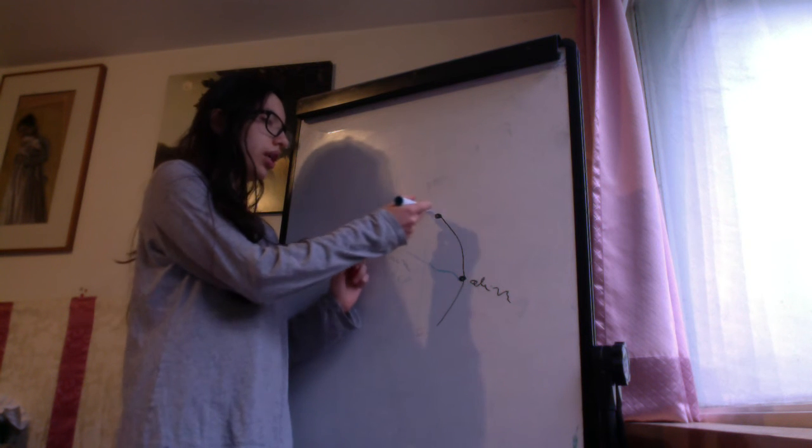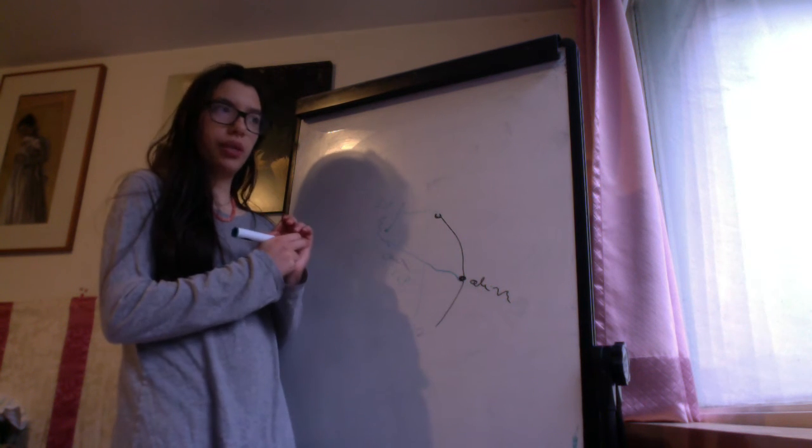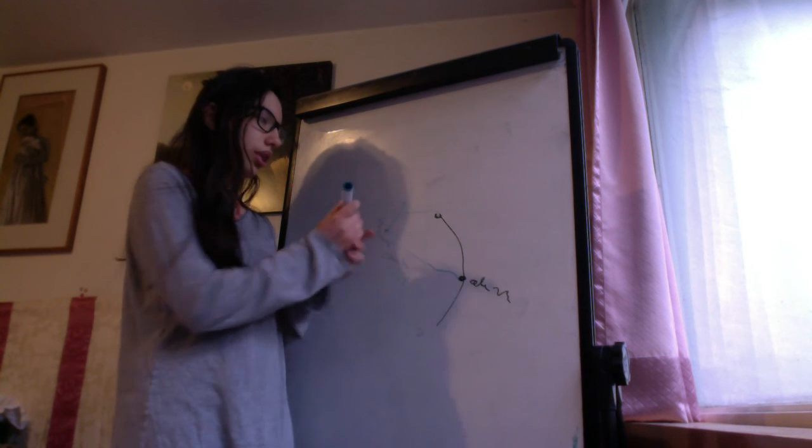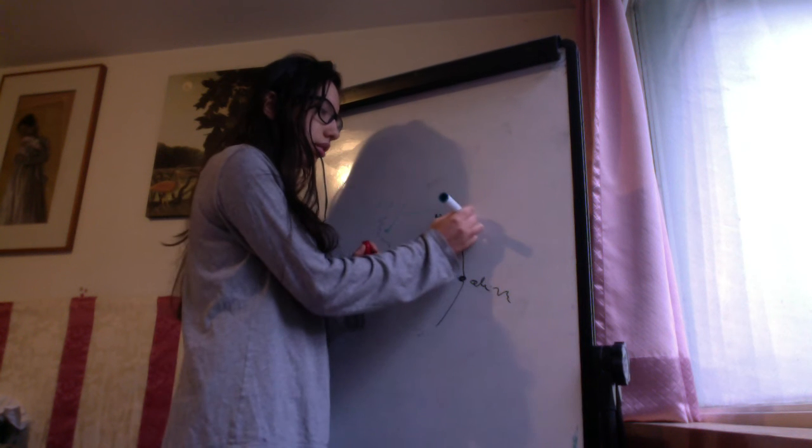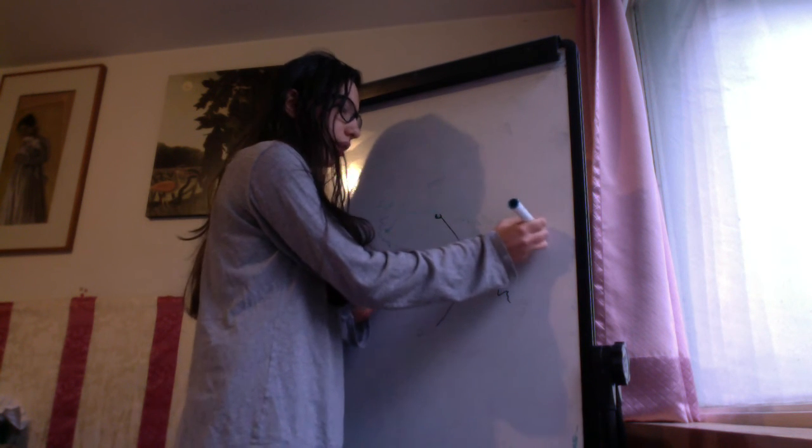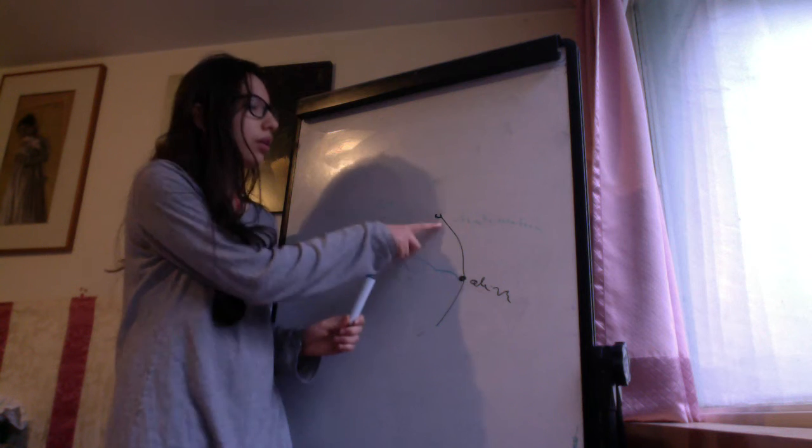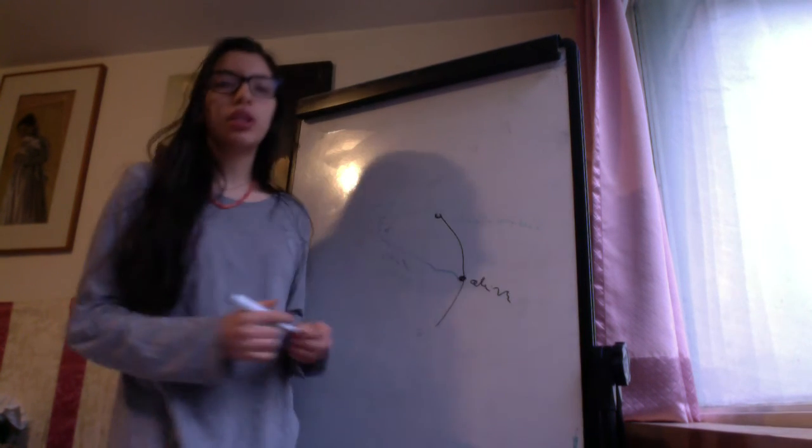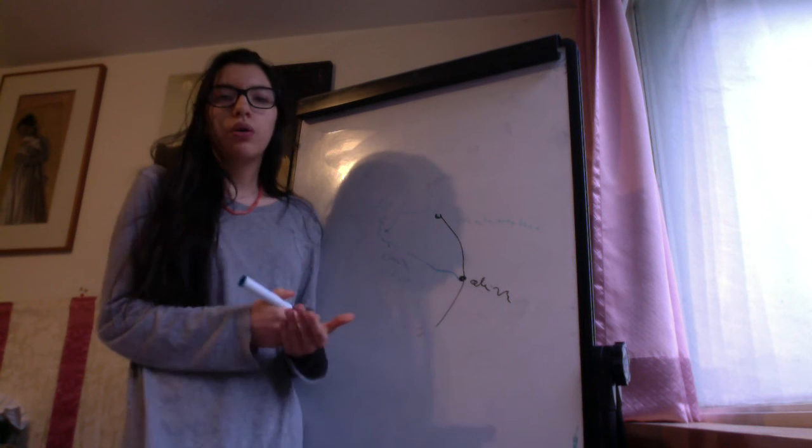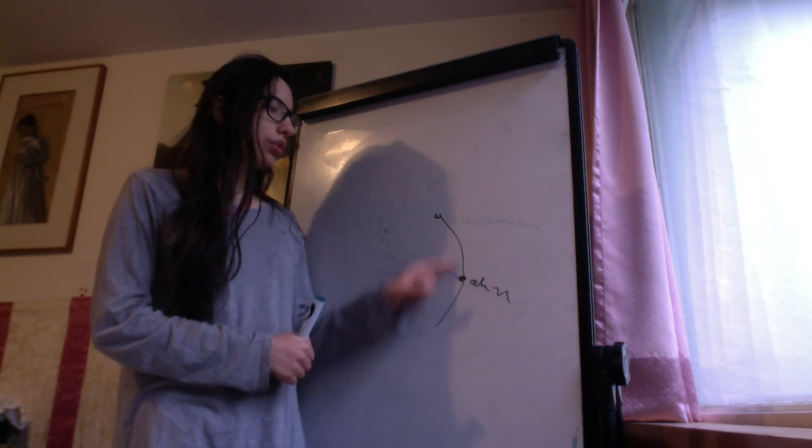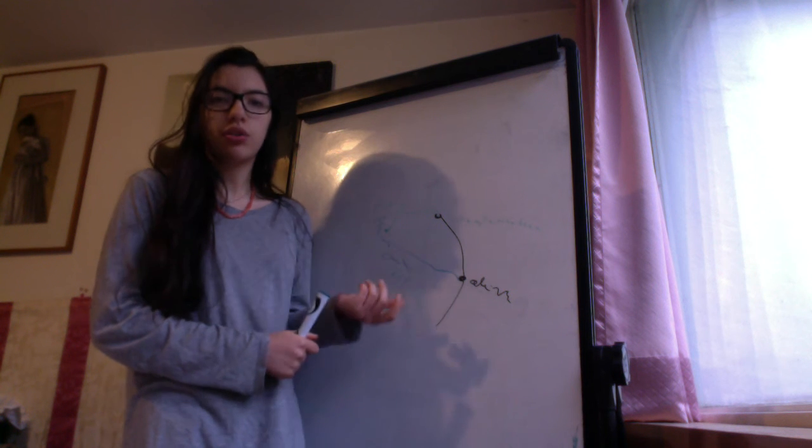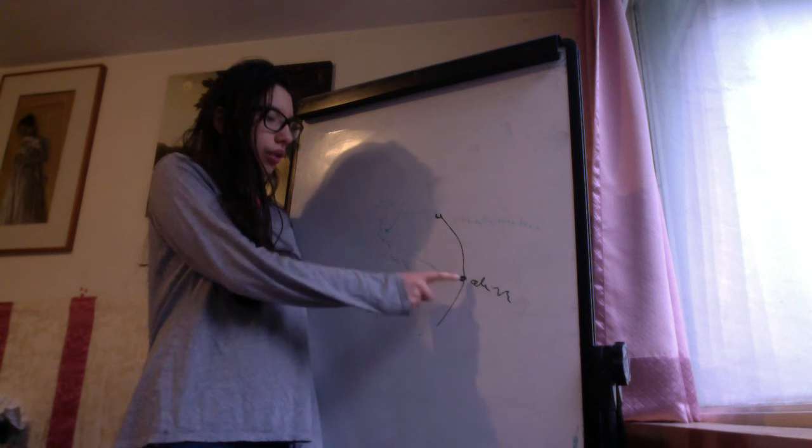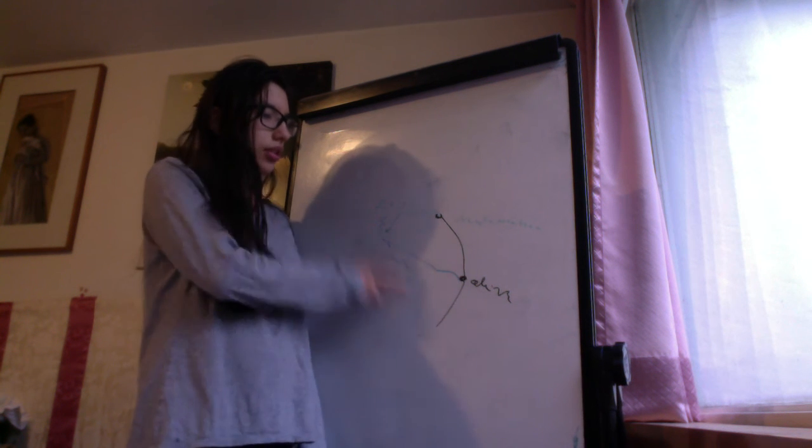They will decusate in the decusation of the superior cerebellar peduncles. This tract is called the dentatorubrothalamic because these go to the red nucleus and to the thalamus. Here, we will not see the thalamus. Actually, this pathway we see it in conjunction with the thalamus but here I just want you to see the circuit. This is a short video. Here, from the red nuclei they go back to the oliva and so we have this circuit.